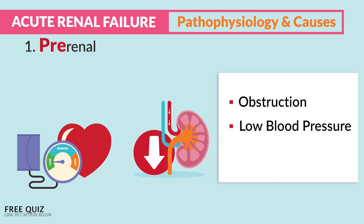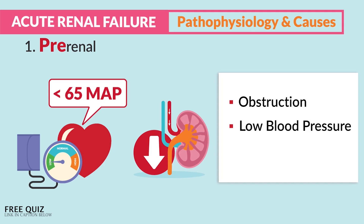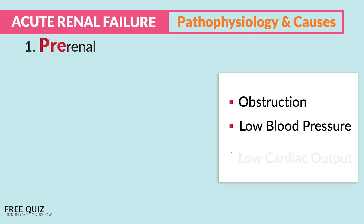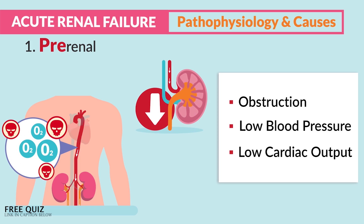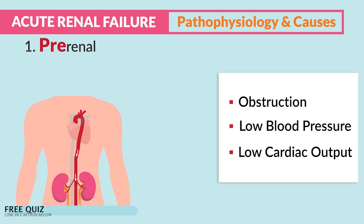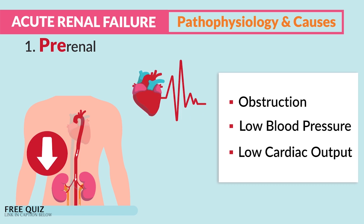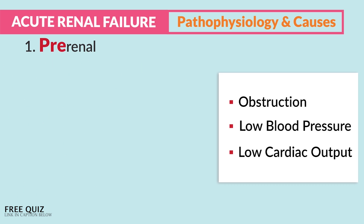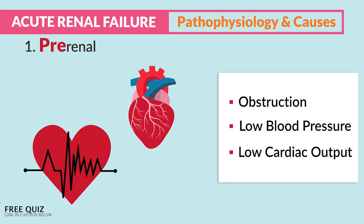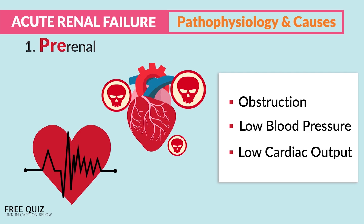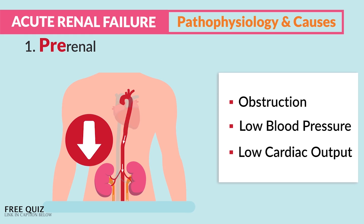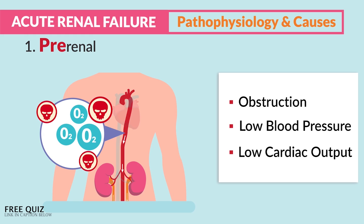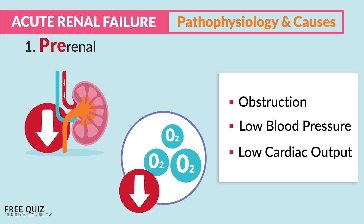Low blood pressure means low perfusion, less than 65 MAP or mean arterial pressure. Lastly, low cardiac output gives us low perfusion — low cardiac output means low oxygen put out of the heart, resulting in low perfusion to the kidneys. This occurs when the heart can't pump correctly, seen with ECG dysrhythmias and even heart failure clients. Even though heart failure clients may have high blood pressure, the big problem is low cardiac output — low volume of oxygen-rich blood out of the heart — resulting in less perfusion and less oxygen to the kidneys.